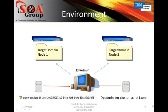First let's talk about the environment. We have two XI50s shown with target domain number one and target domain number two. And then we have DP Admin, which resides on a Linux server. It's going to be utilizing the exported services that we exported previously, and then utilizing a script that defines the commands that we want to issue for our environment.